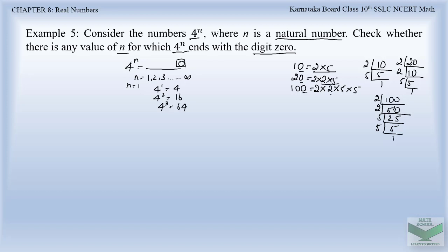Any number which ends with the digit 0 should have factors 2 and 5. Coming to our number 4 power n, let us first find the factors of 4. Dividing 4: 2 twos are 4, so the factors of 4 are 2 into 2. So we can write 4 power n as 2 power 2n. From here, the factors of 4 are only 2. But for any number to end with the digit 0 we need factors 2 and 5. So for any value of n, we won't be able to obtain a number whose last digit will be 0.